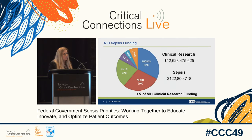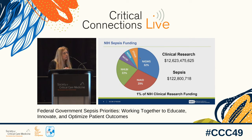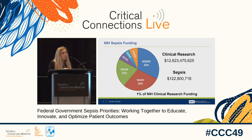NIH funding is divided into three major buckets: clinical research, basic research, and training. In 2018, NIH devoted about $12 billion to clinical research, of which about 1% was specifically devoted to sepsis research — though much research in infectious disease and other areas is also applicable to sepsis. This data is obtained using NIH Reporter and specific RCDC categories used to report spending to Congress.